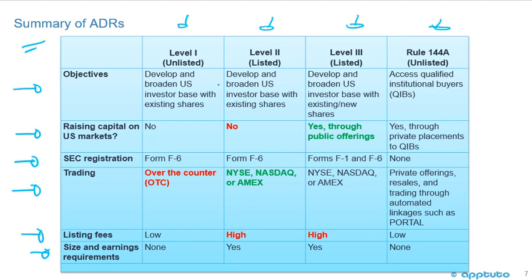Level 1 unlisted ADRs develop and broaden the U.S. investor base with existing shares. They are not raising capital on U.S. markets. The SEC registration form is F6, and because they're unlisted, trading is over-the-counter. Listing fees are low and there are no size and earnings requirements.